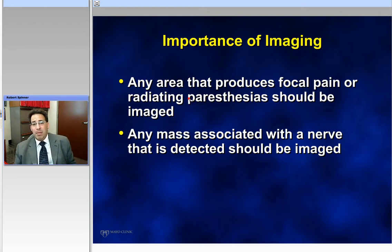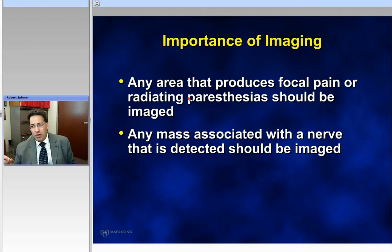If somebody had a peroneal nerve-type palsy, I would percuss along the nerve. If there was no trauma, then I'm thinking about an entrapment at the fibular neck. If, however, the patient localized to the thigh rather than the fibular neck, then I want to make sure the thigh is part of the imaging.